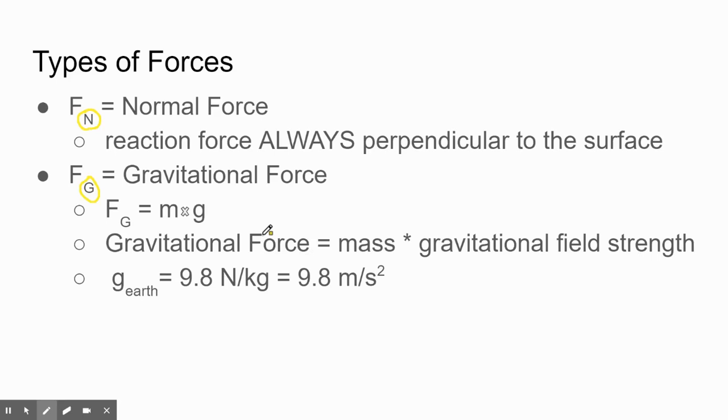If you go to the moon, the moon's gravitational field strength is like 1.6. If you go to Jupiter, G is like 25. But almost all the problems that you guys will be doing take place on Earth because that's where you will probably spend most of your life. So we'll just stick with 9.8 for a lot of the stuff.